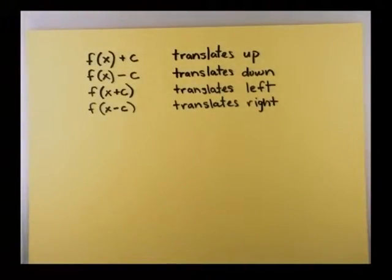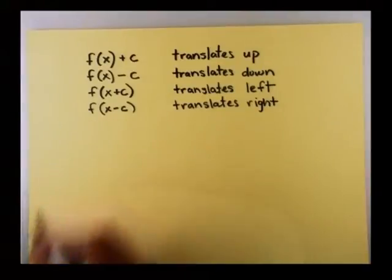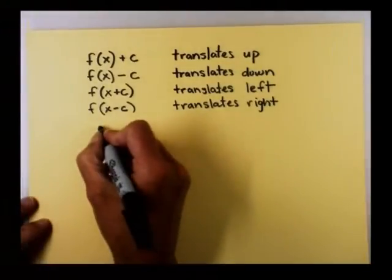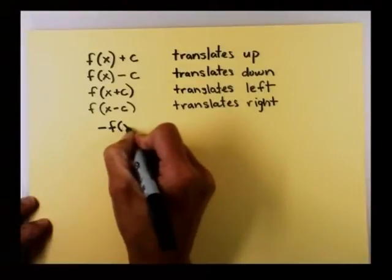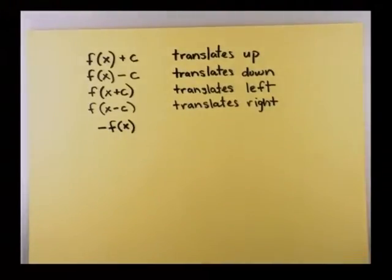The next thing we did, remember, was one of the things we did was we flipped it over the x-axis. So in order to flip it over the x-axis, we had a negative multiplier out in front of our function.